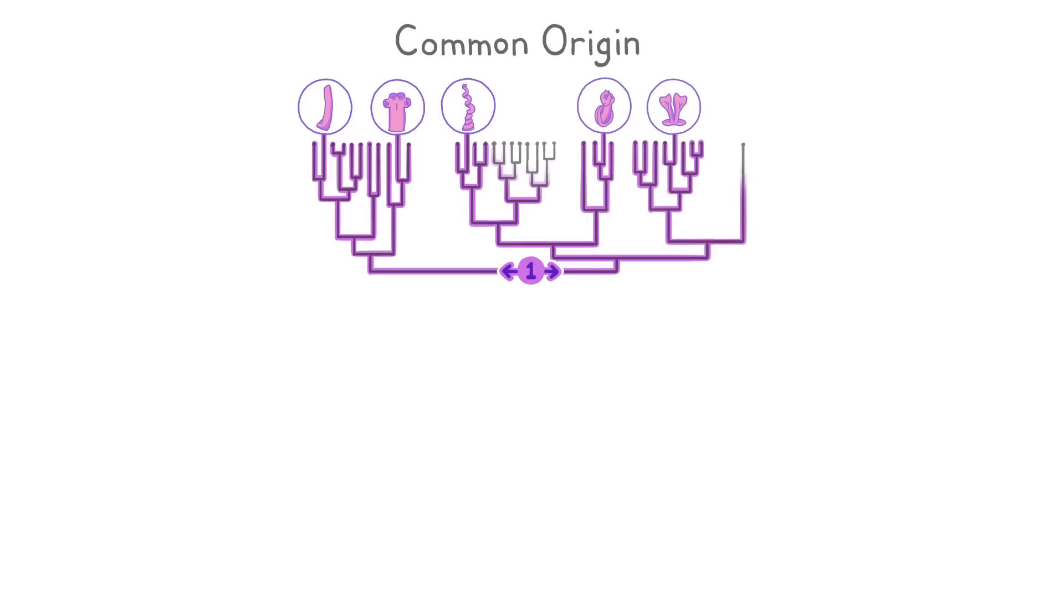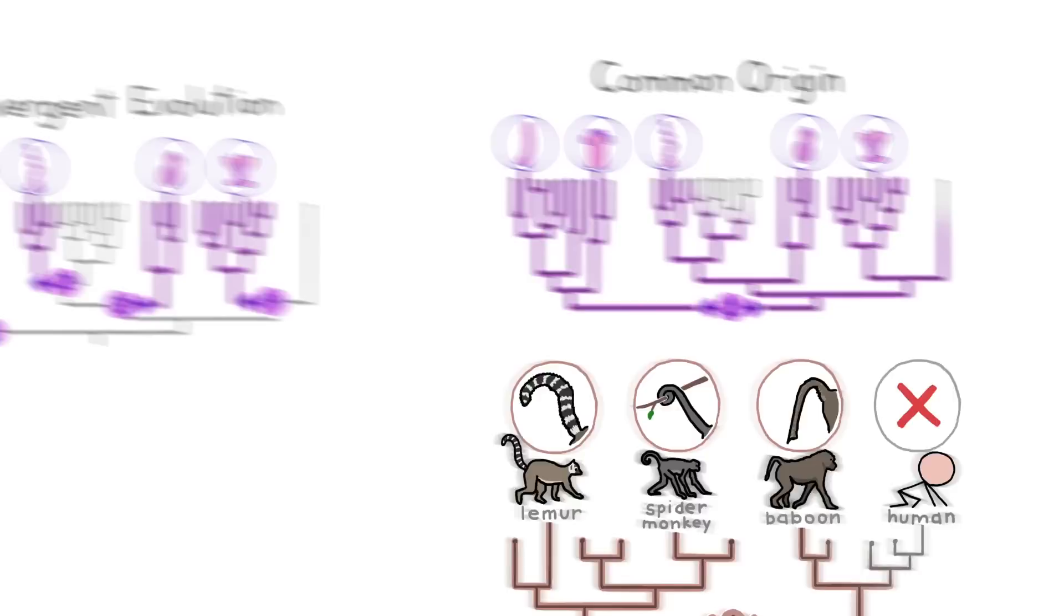The other possibility, though, is that amniote penises arose only once, just like how all primates' tails have a single origin, despite their diversity and despite the fact that some primates are completely tailless.